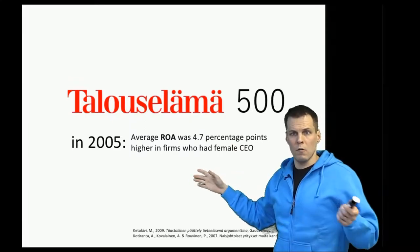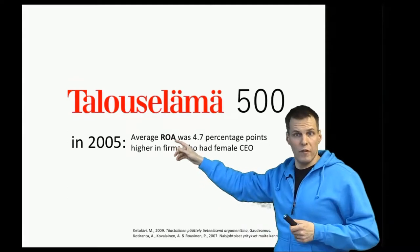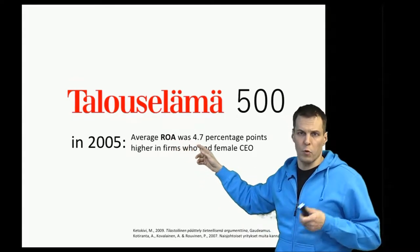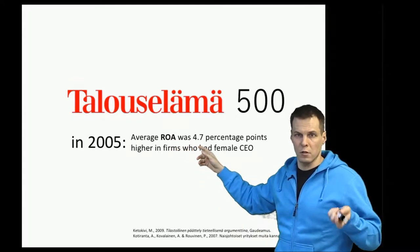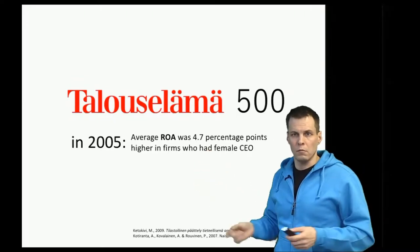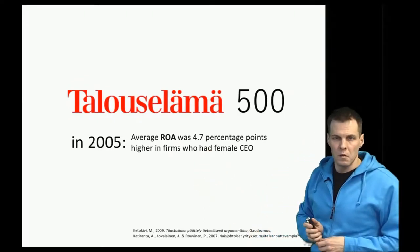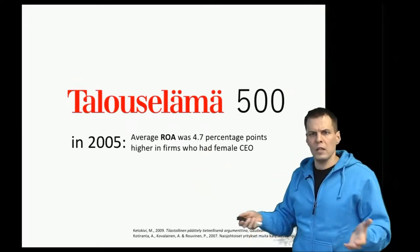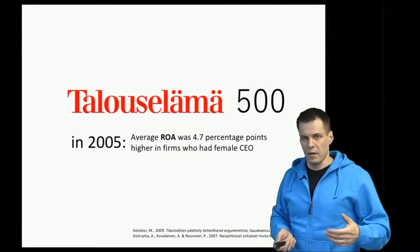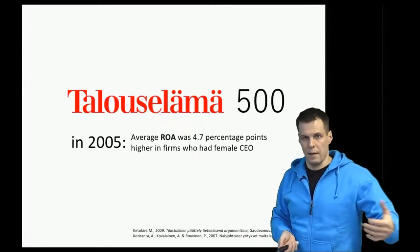So our question now is: we have an observation of a return on assets difference of 4.7 percentage points — is it a big deal? Does it matter? What does the data tell us, and what kind of inferences can we make from this sample?